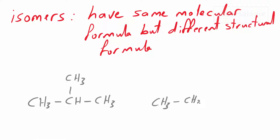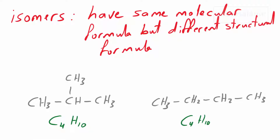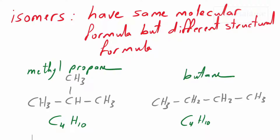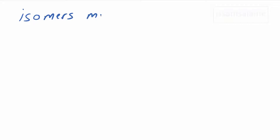If we count the carbon atoms in these two structures, we find they have the same number of carbon atoms and the same number of hydrogen atoms, but they have different arrangements. That's why they have different names: the first one is called methylpropane and the second one is called butane. Isomers must have different names — if you have the same name, it means it's not an isomer.